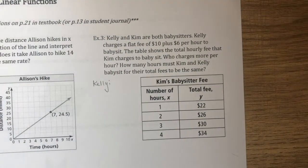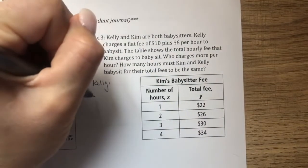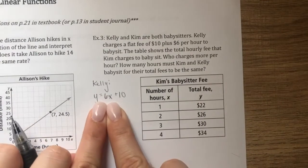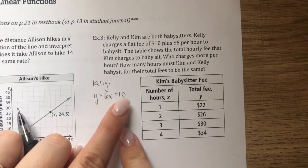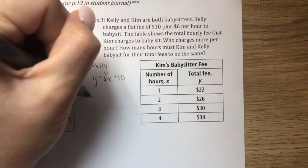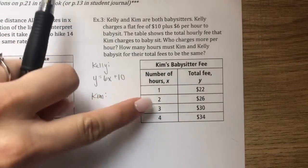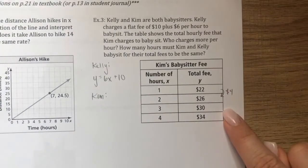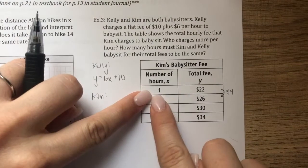Kelly charges a flat rate of ten dollars — that's like the y-intercept — and six dollars per hour, so y equals 6x plus 10. For Kim, from the table each hour she makes four dollars more: the difference between 22 and 26 is four dollars, and again from 26 to 30, four dollars. But that doesn't tell us her initial fee directly.